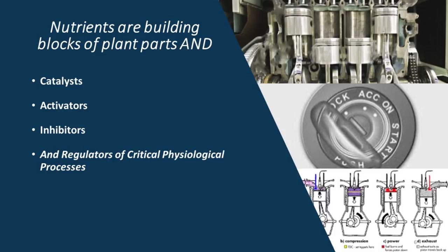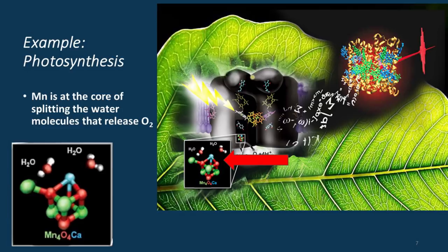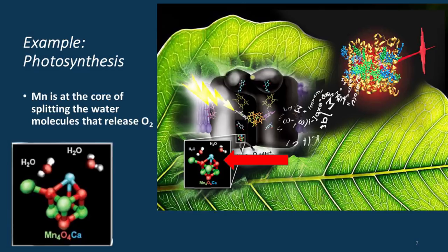Photosynthesis is a very critical process. If you go back to your ninth grade mind, you remember it as something like CO₂ + H₂O + light = C₆H₁₂O₆ + O₂. But there's a lot that's lost in that very simplified equation.